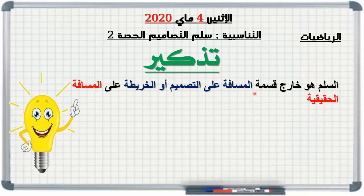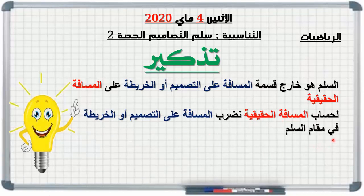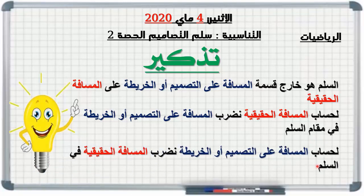رأينا أن السلم هو خارج قسمة المسافة على التصميم أو الخريطة على المسافة الحقيقية. لإيجاد السلم نقوم بقسمة المسافة على التصميم على المسافة الحقيقية. لحساب المسافة الحقيقية نضرب المسافة على التصميم في مقام السلم. ولحساب المسافة على التصميم نضرب المسافة الحقيقية في السلم.